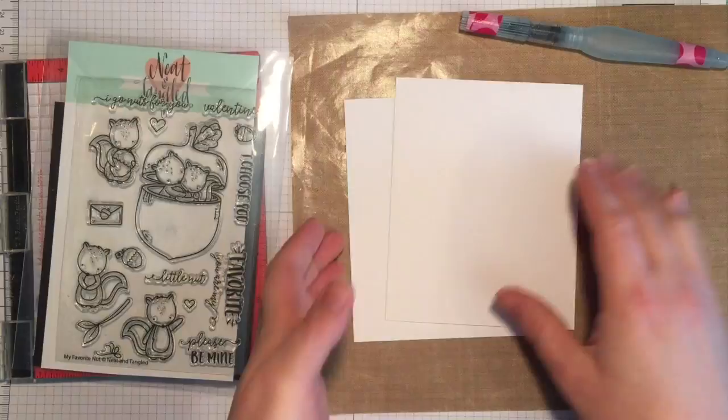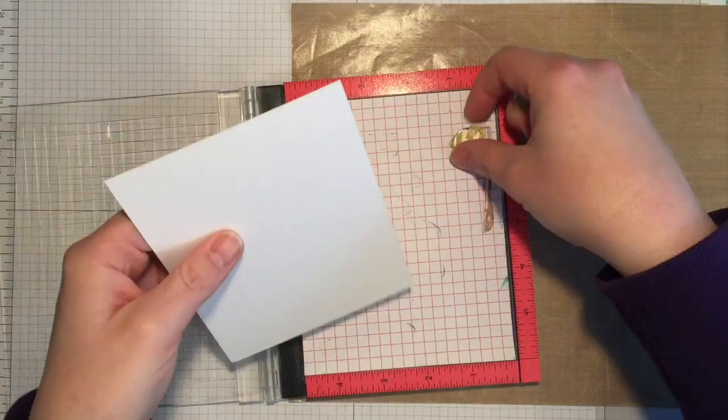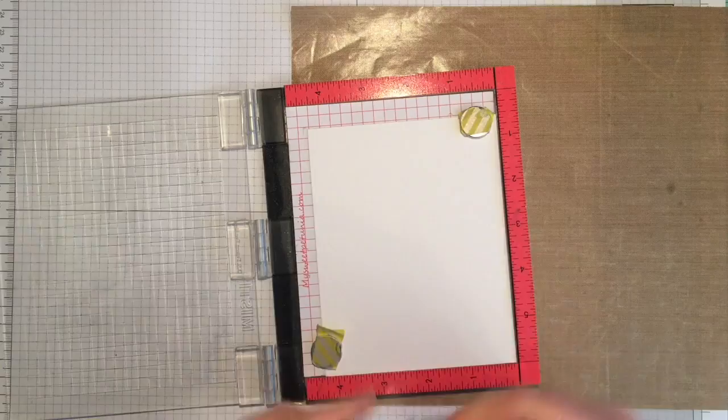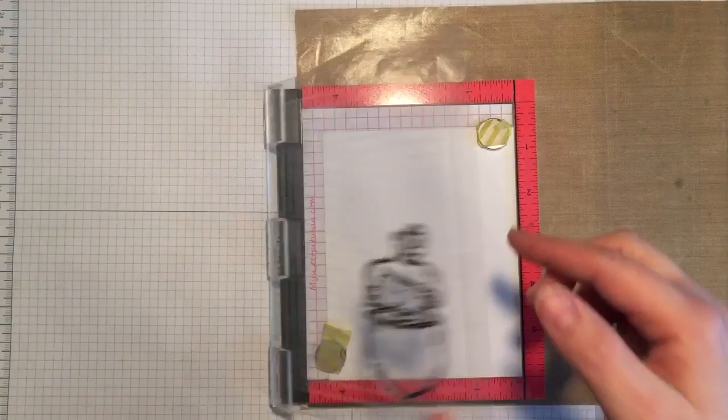I'm going to lay my cardstock in, get my image, lay it down, close the door, ink it up with the VersaFine Onyx Black and stamp it onto my cardstock.